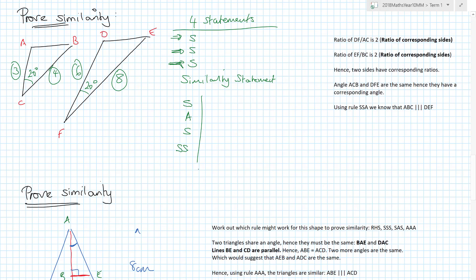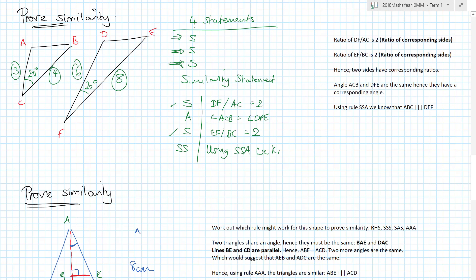Let's look at the sides. Is DF divided by AC the same as EF divided by BC? DF divided by AC equals 2, and EF divided by BC also equals 2 — so both sides are in the same ratio. Do we have a common angle? We absolutely do. So we can say angle ACB is the same as angle DFE. Using SAS, we can now write: triangle ABC is similar to triangle DEF. You don't necessarily have to write the word triangle, but those four statements are what you need.